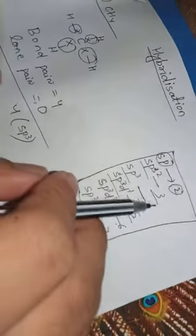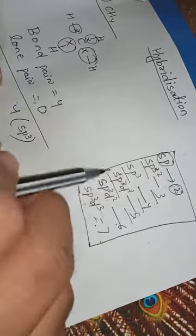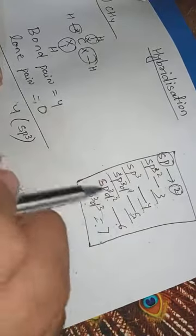You have to remember this chart. When this is 2, SP. When 3, SP2. 4, SP3. 5, SP3D. 6, SP3D2. 7, SP3D3. Then we will be able to calculate this formula.